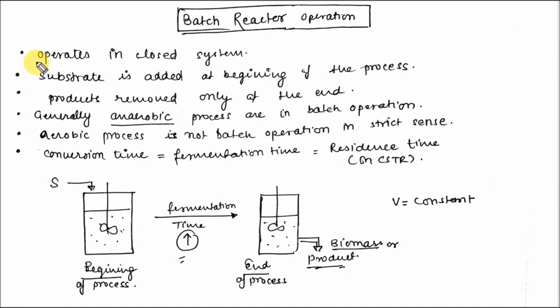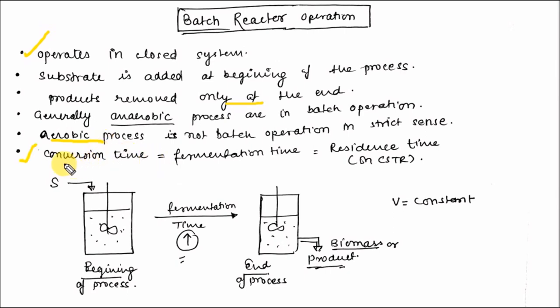The batch reactor operates as a closed system — substrate is added at the beginning of the process and product is removed only at the end. It is generally used for anaerobic processes. Aerobic processes are not batch operations in the strict sense, because you have to add air or oxygen at intervals, so it is not strictly a batch reactor process.